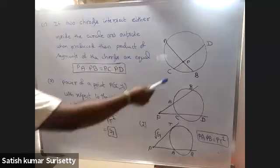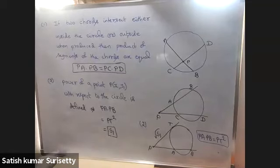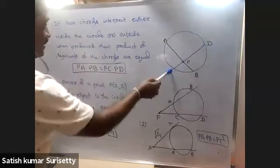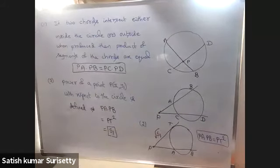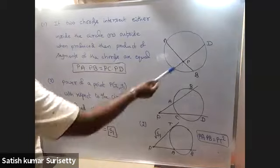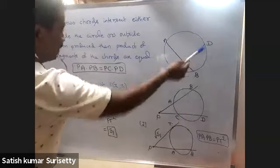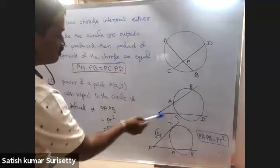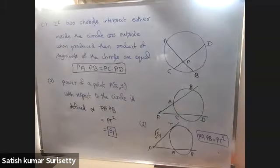In plane geometry, we have a property of circles: if two chords intersect either inside or outside when produced, then the product of the segments are equal. That is, PA into PB equals PC into PD. This can be proved using similar triangles.